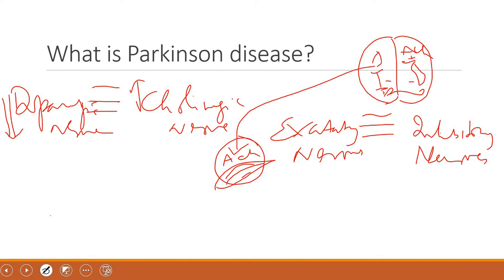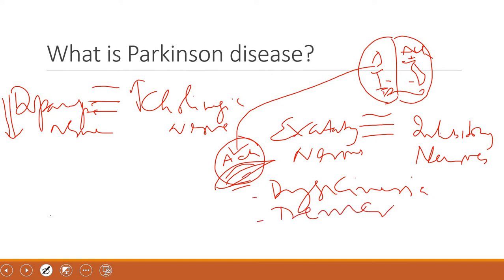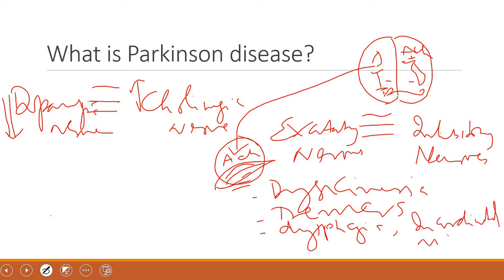When the cholinergic activity is predominant and it is innervating the skeletal muscle, there will be tardive dyskinesia, dyskinesia, and tremors. These tremors are not point tremors as happen in hyperthyroidism. If the muscles of deglutition and the esophagus are affected, there may be dysphagia. There are also incoordinated movements that create significant problems for the patient.